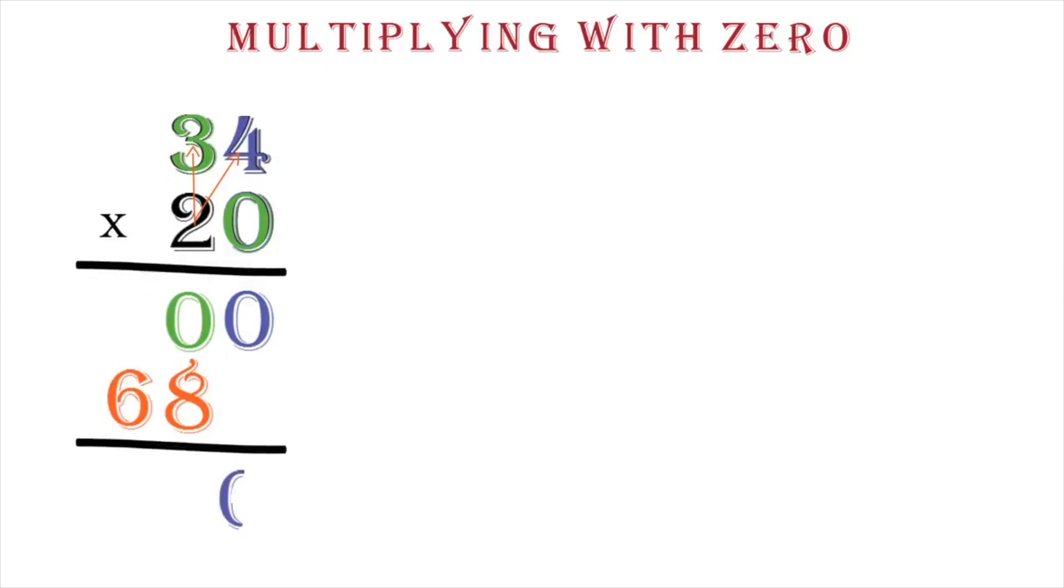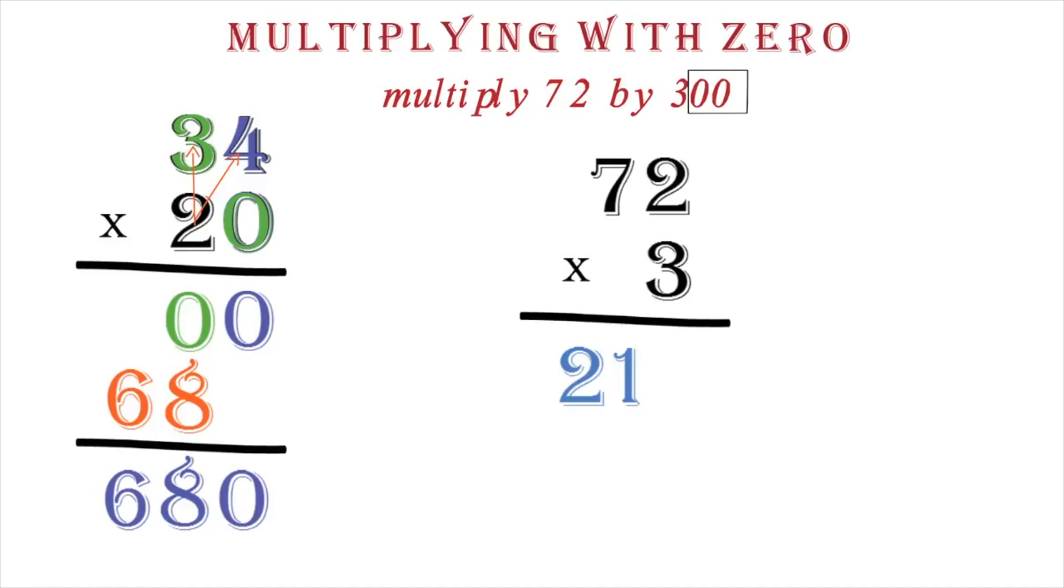We add them to get 680. A simpler way when the zero comes after the number, like 2300 or 20 or 500, will be to ignore the zeros when multiplying and bring them to your final answer after you are done. Example, let's multiply 72 by 300. Here we can ignore these two zeros. So, we work on 72 times 3. This will give us 216. Then, after this, we just bring our two zeros after it. This will be our final answer. Please note that this does not work for zeros within digits like 205 or 1402. The zeros must be at the end.